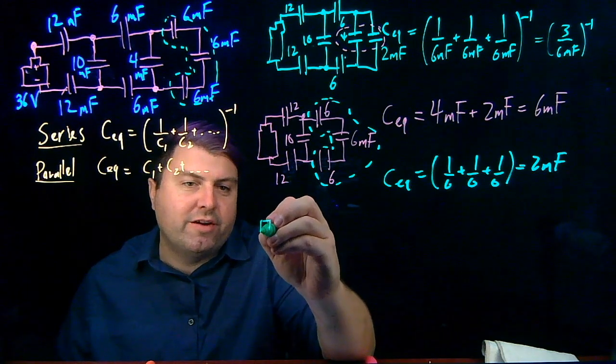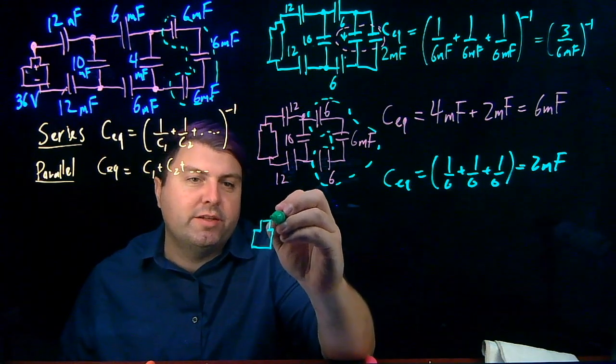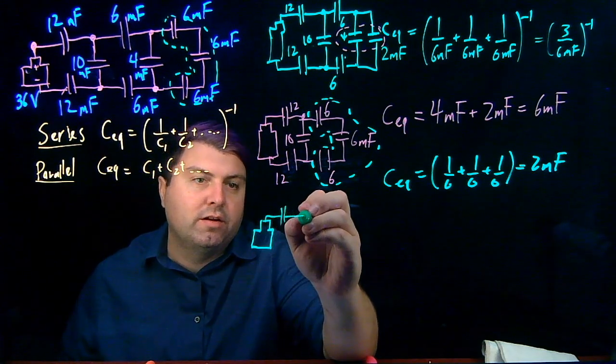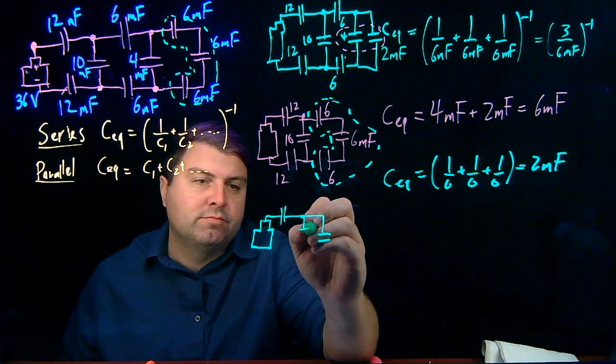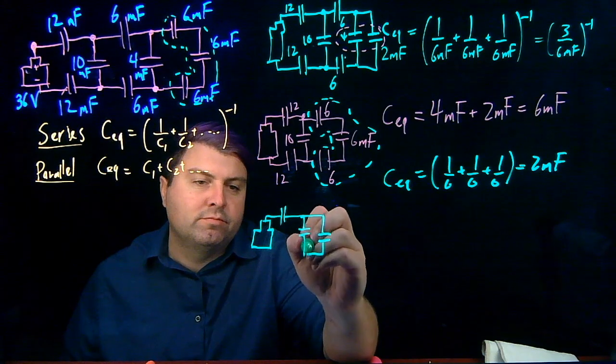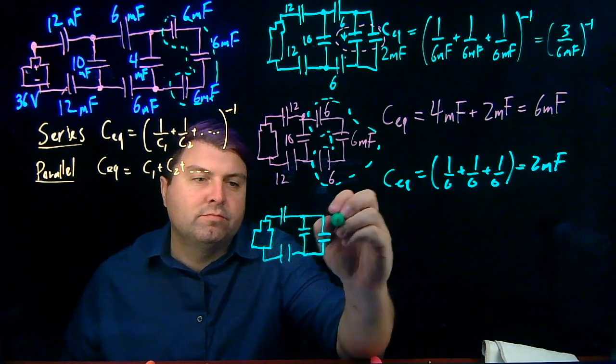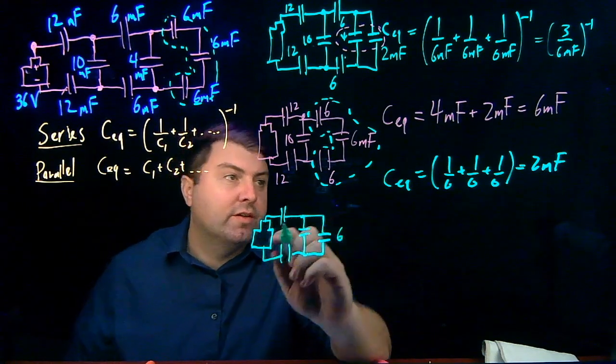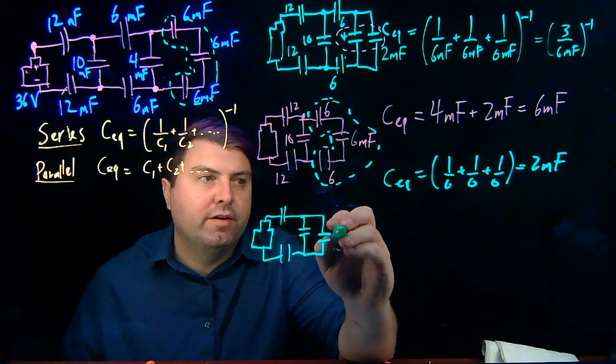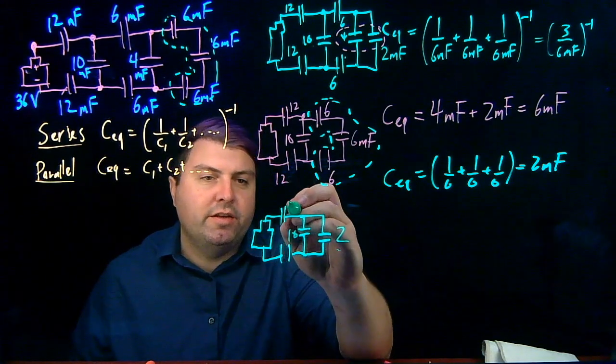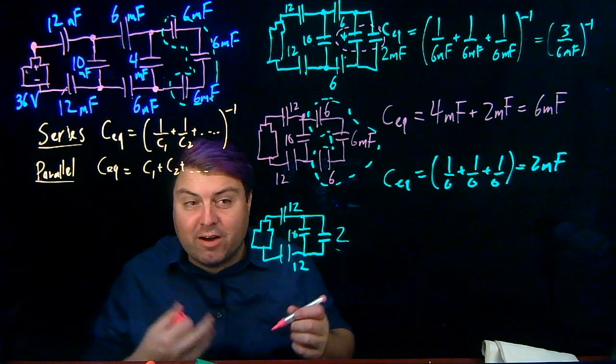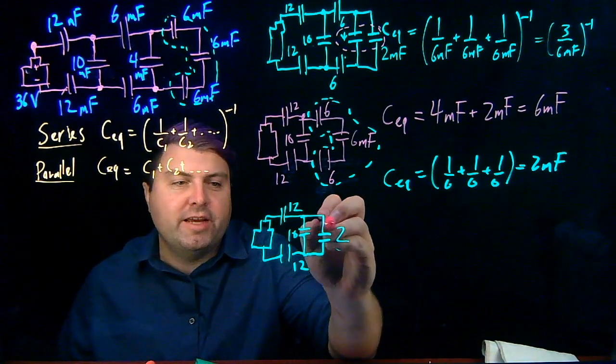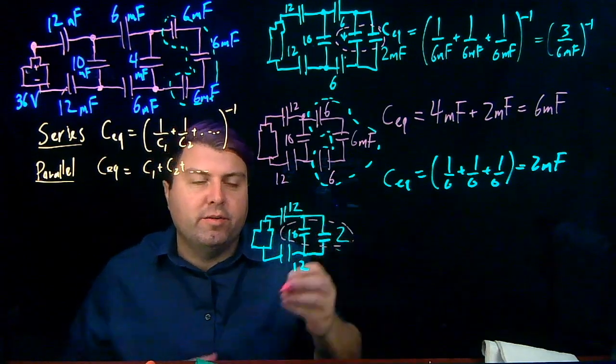Redrawing this circuit, now we're getting in the home stretch a little bit. We have this is 10, this is 12, and this is 12. Only so much more to go now, because now we have, again, this 10 and this 2 are in parallel.